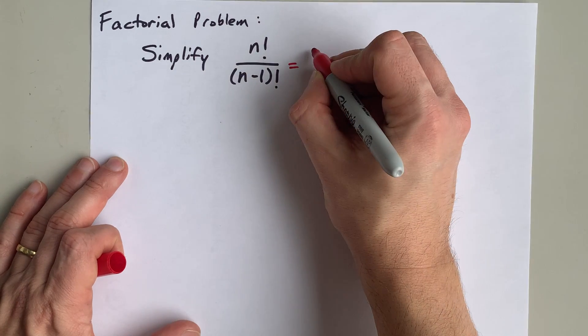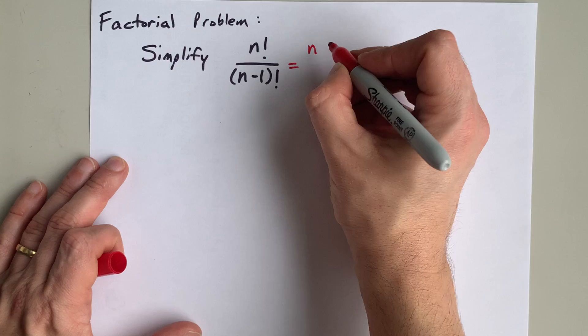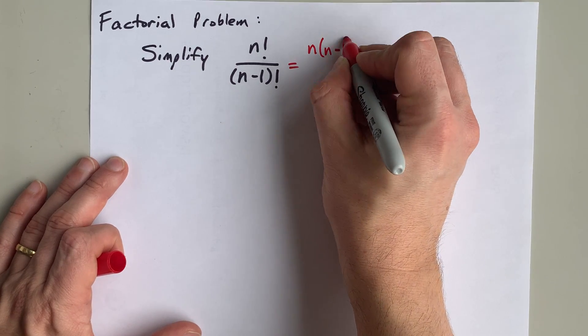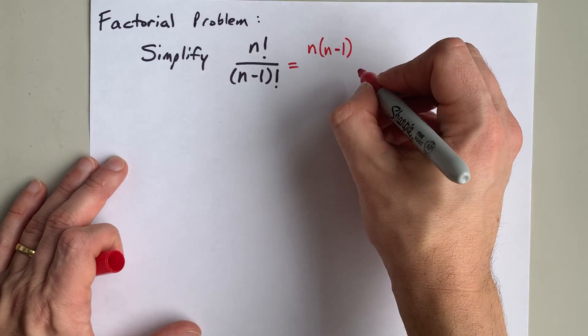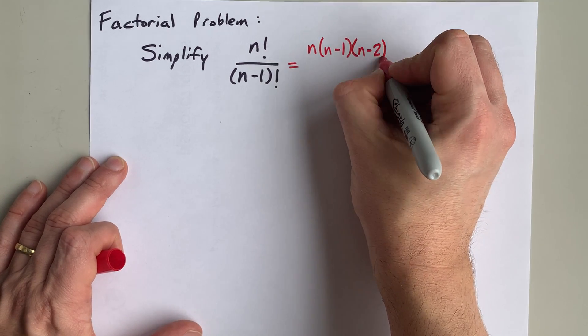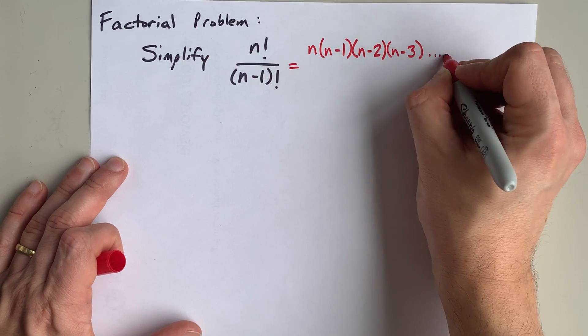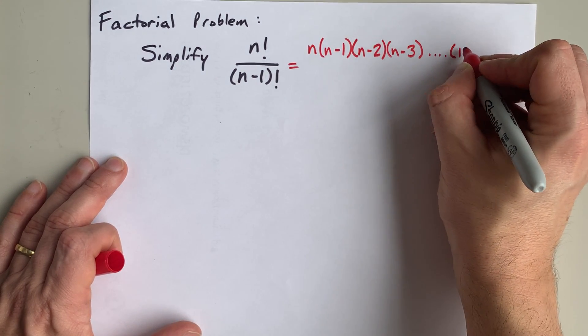So what I mean is that you'll start at n and you'll times by the number that's 1 lower than that, which is n minus 1, and you'll multiply that by what is 1 lower than that, which is n minus 2, and n minus 3, and all the way down until you reach just 1.